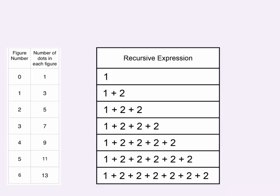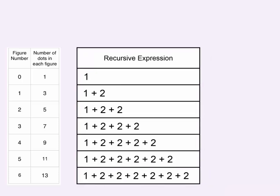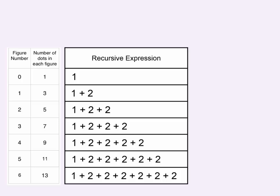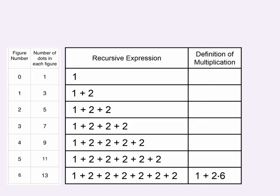There is a better way to repeatedly add the number 2. We can rewrite the expanded expressions with multiplication. We start with 1 and add six 2's, or 1 plus 2 times 6. We start with 1 and add five 2's, or 1 plus 2 times 5. We start with 1 and add four 2's, or 1 plus 2 times 4, and so on.